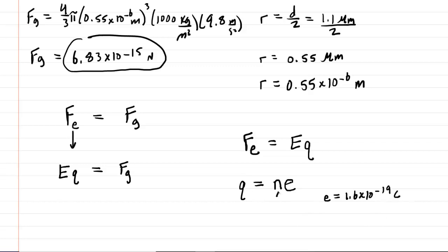So again, the total charge that an object contains, this little q, would equal the number of excess charges multiplied by the amount of charge on a single excess charge. So in other words, lowercase n times lowercase e. So that's the substitution that we'll make for q here. And the reason that that's nice is because it introduces n. And n is exactly what we are attempting to solve for.